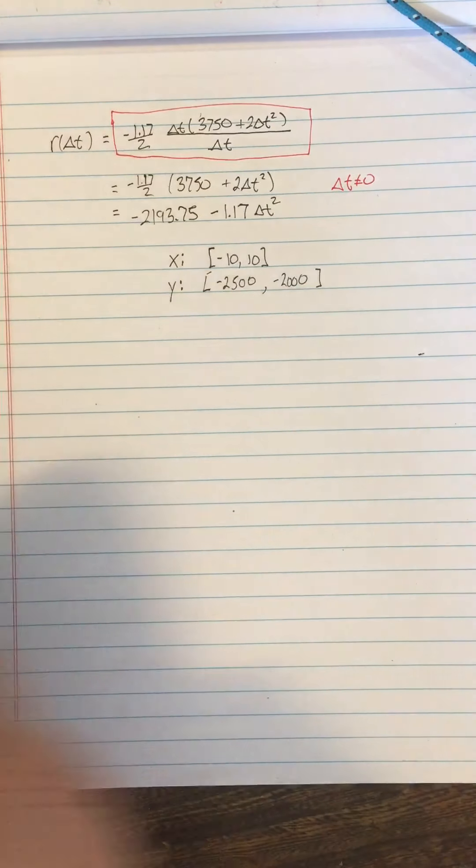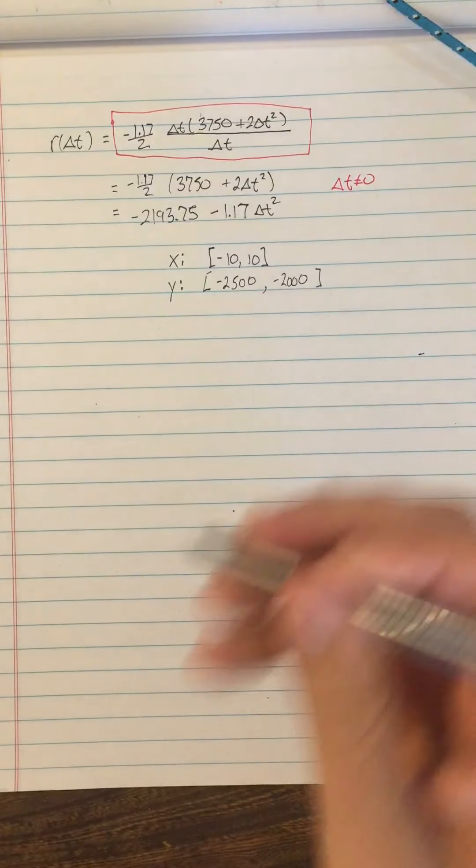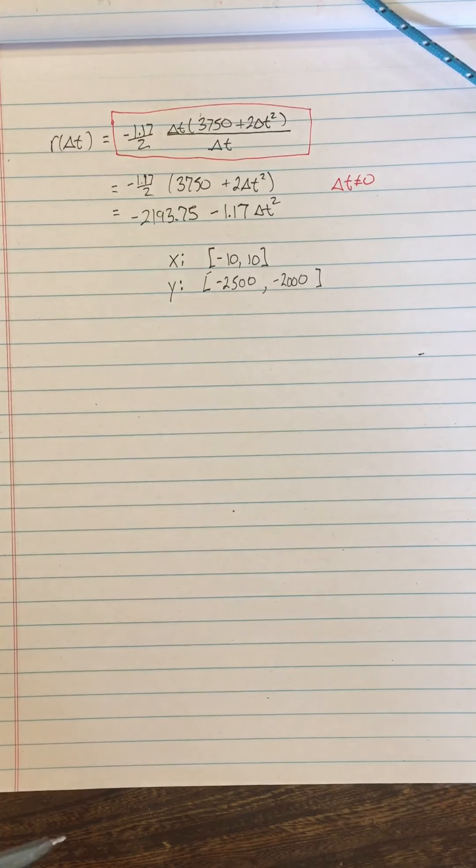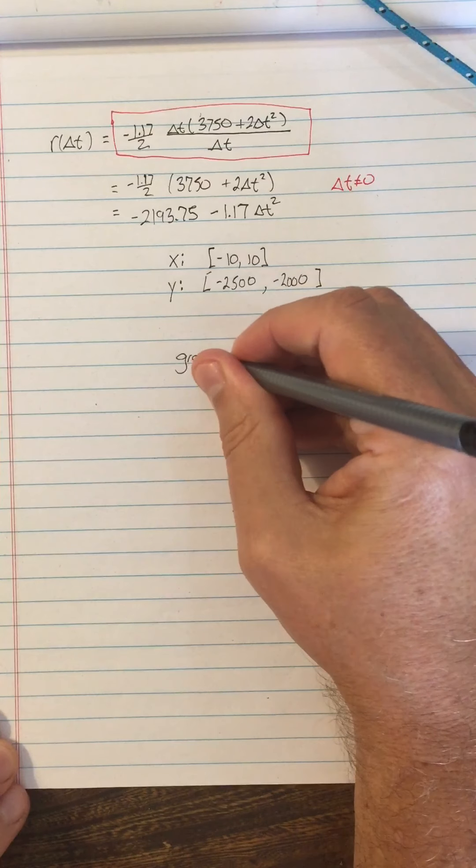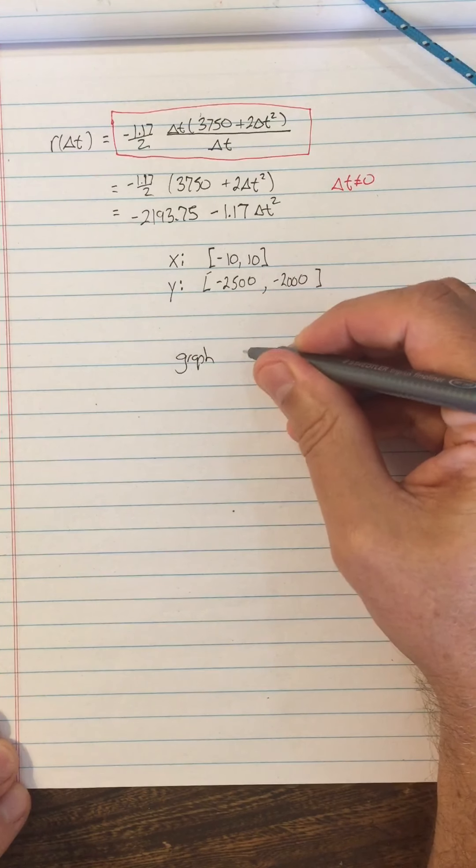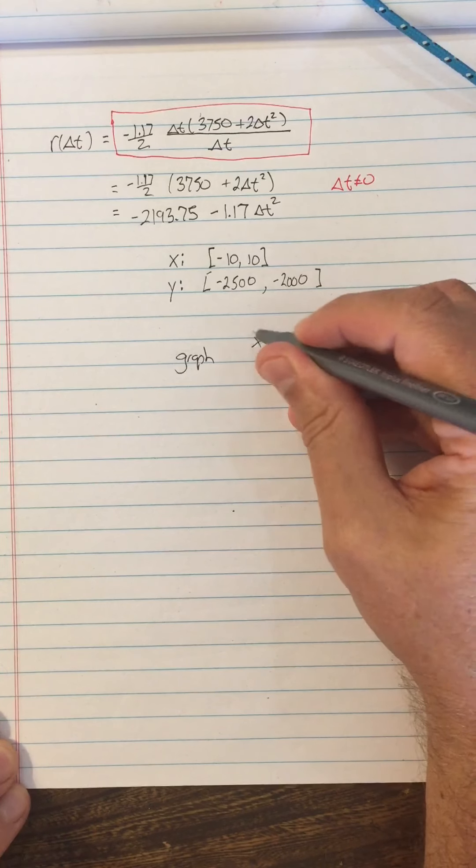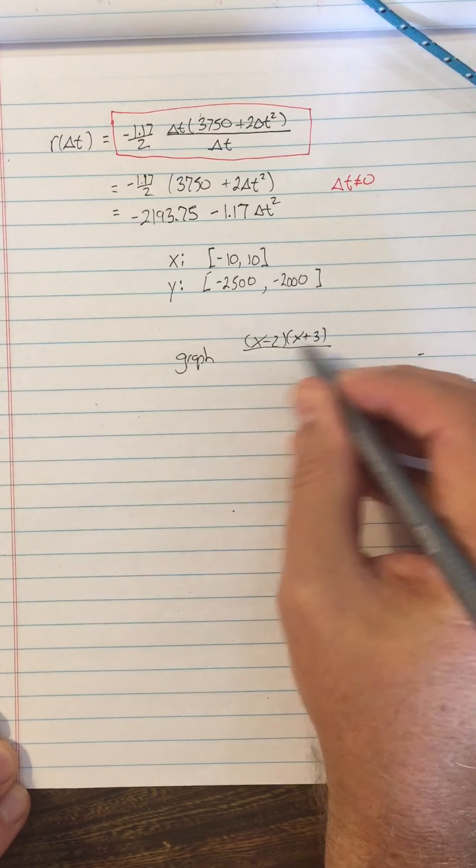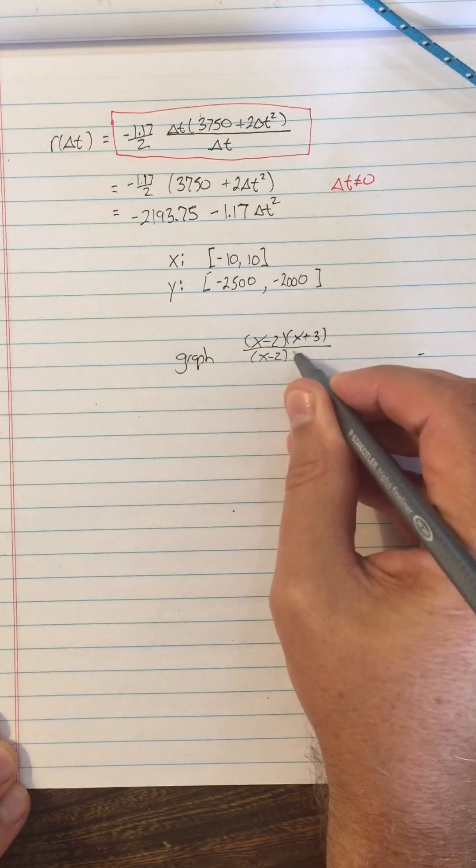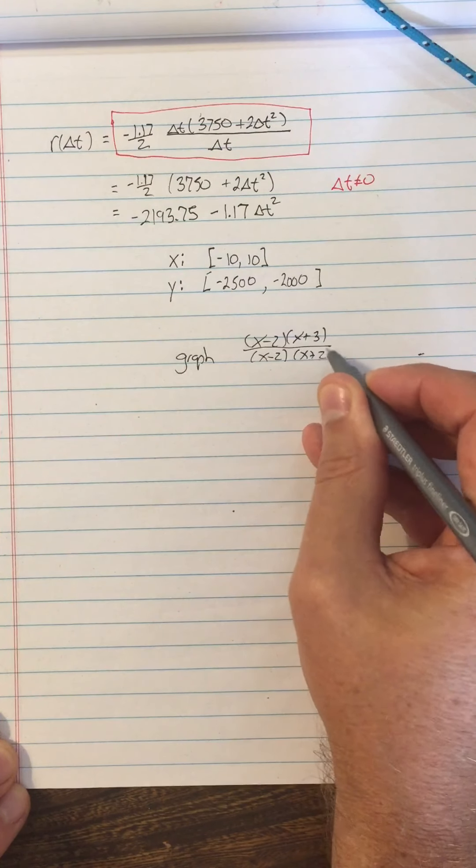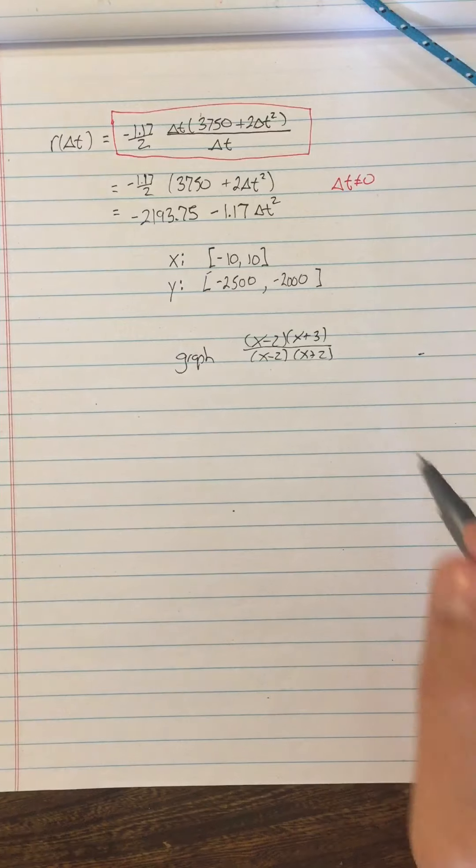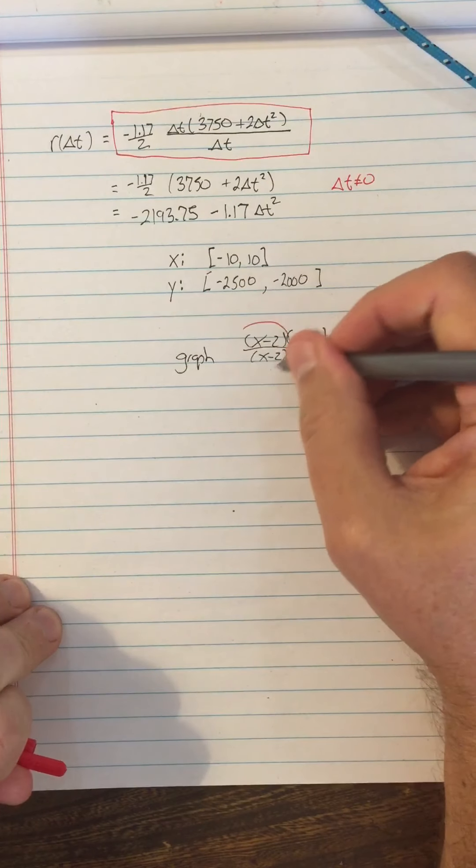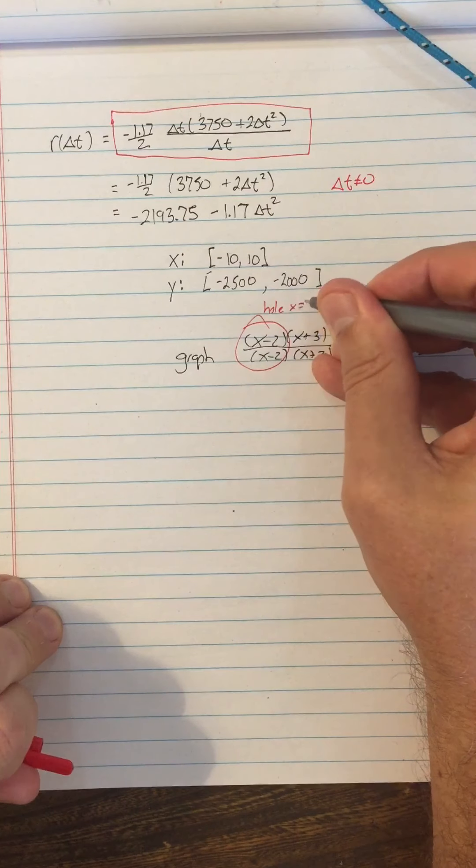Alright, so think about when you used to graph in your pre-calculus and possibly in Algebra 2, if you would graph something like x minus 2 times x plus 3 over x minus 2 times x plus 2. Do you remember how to graph that? Yeah, so you would look for any matching factor top and bottom, you would know as a hole, right? This would be a hole right there, so we'd have a hole at x equals 2.